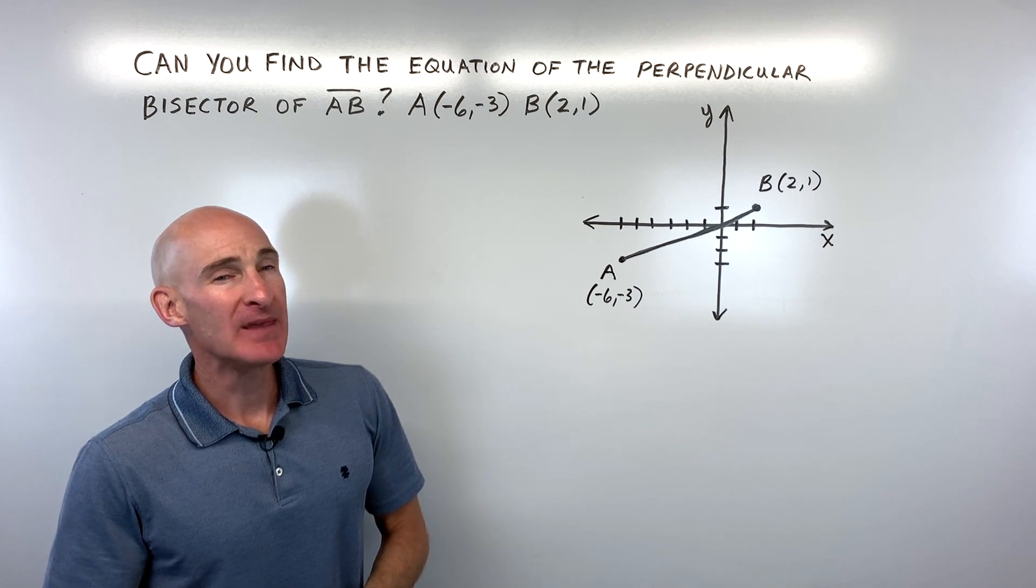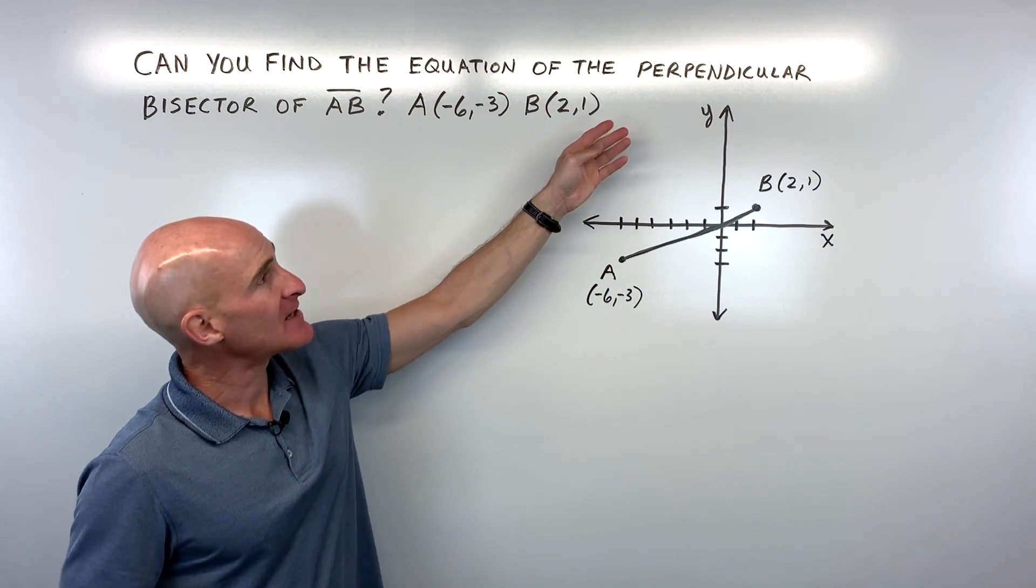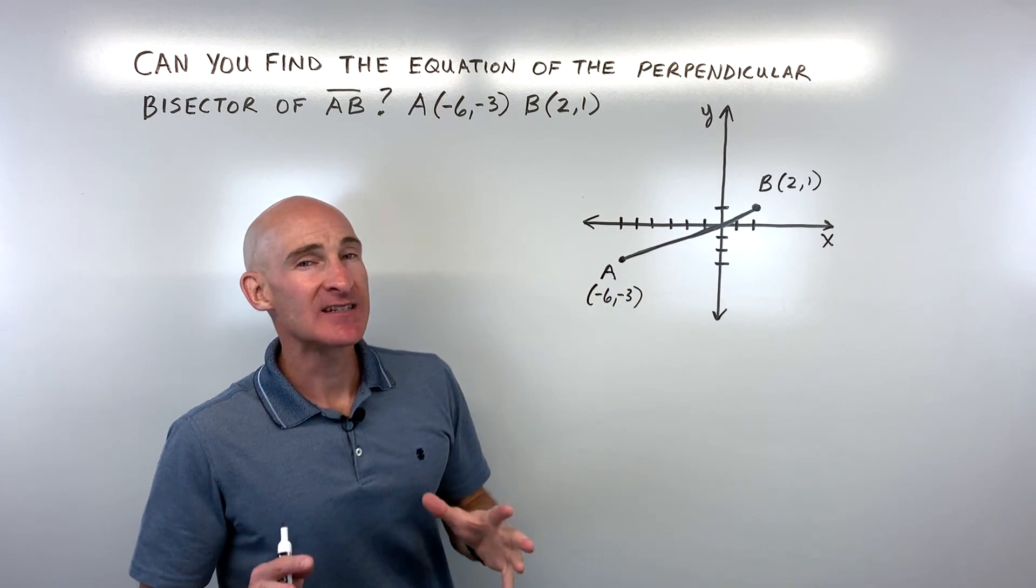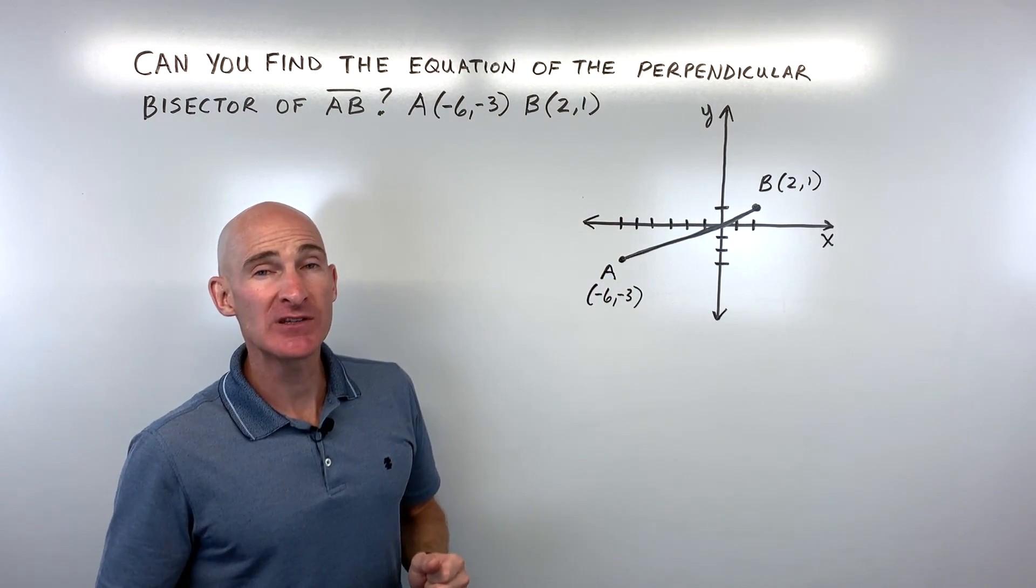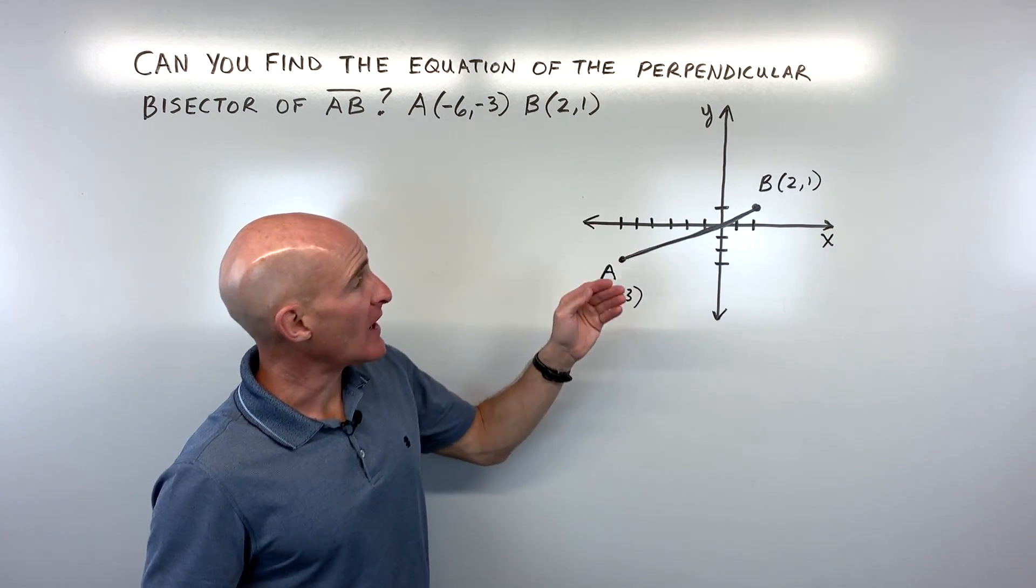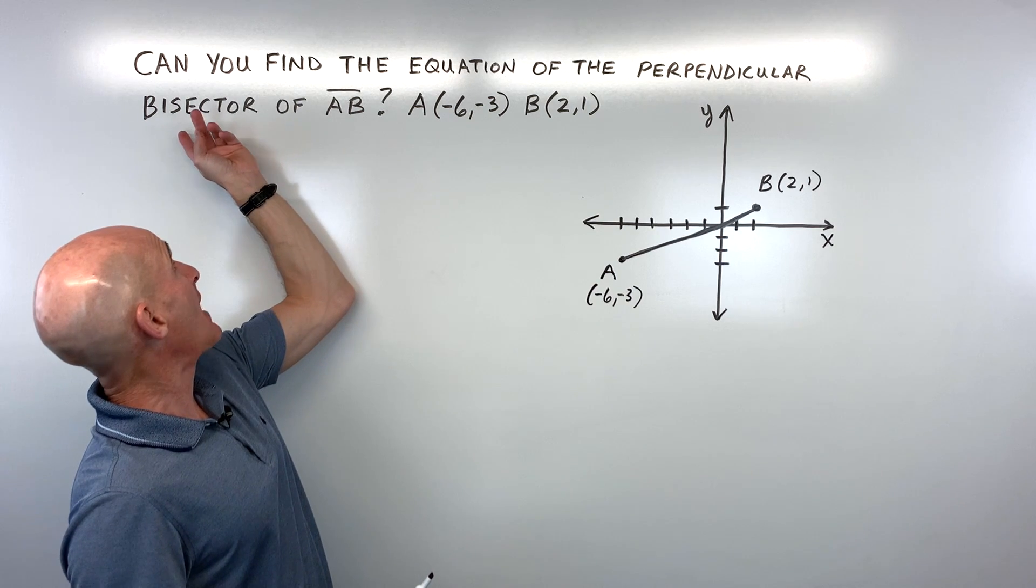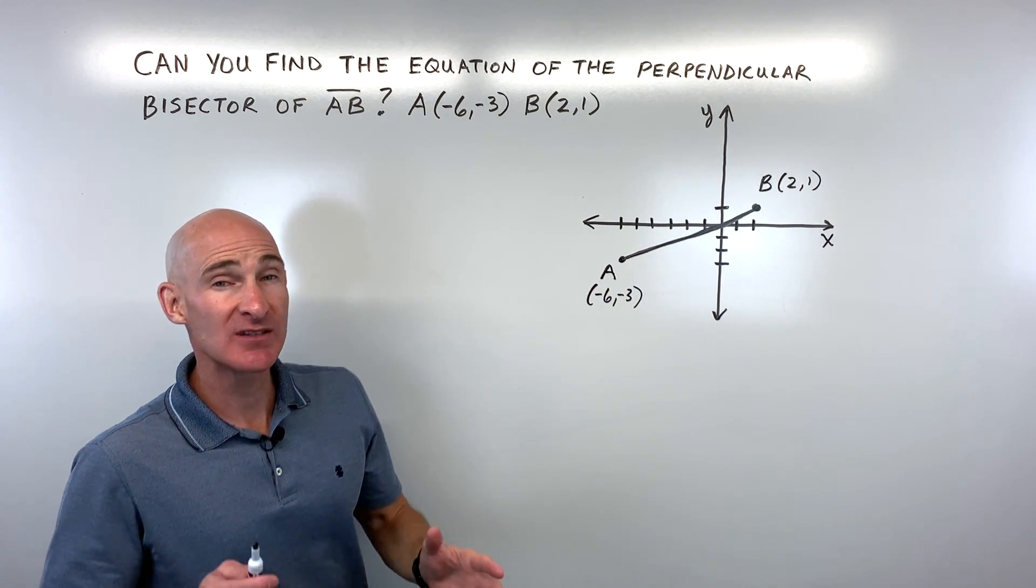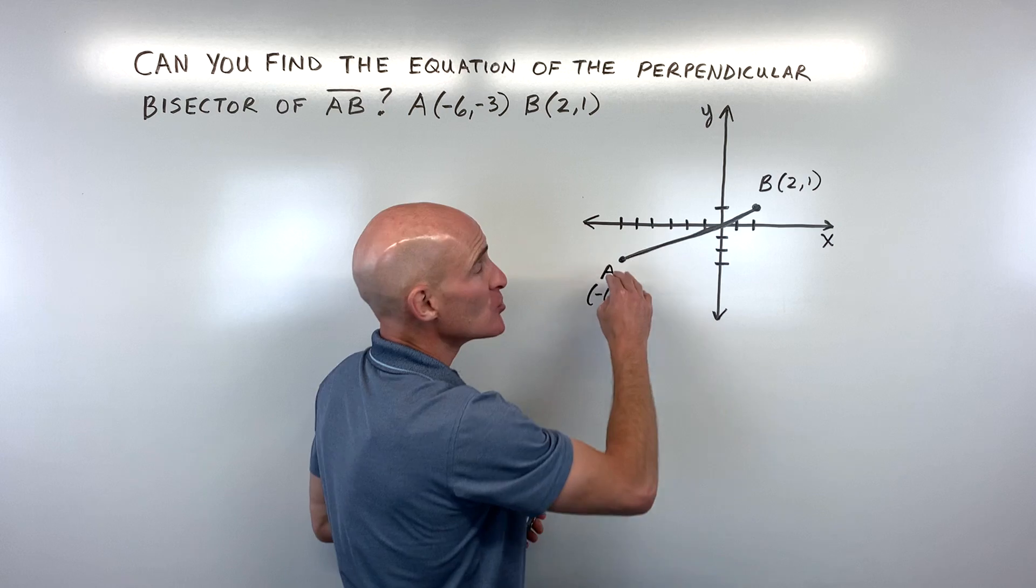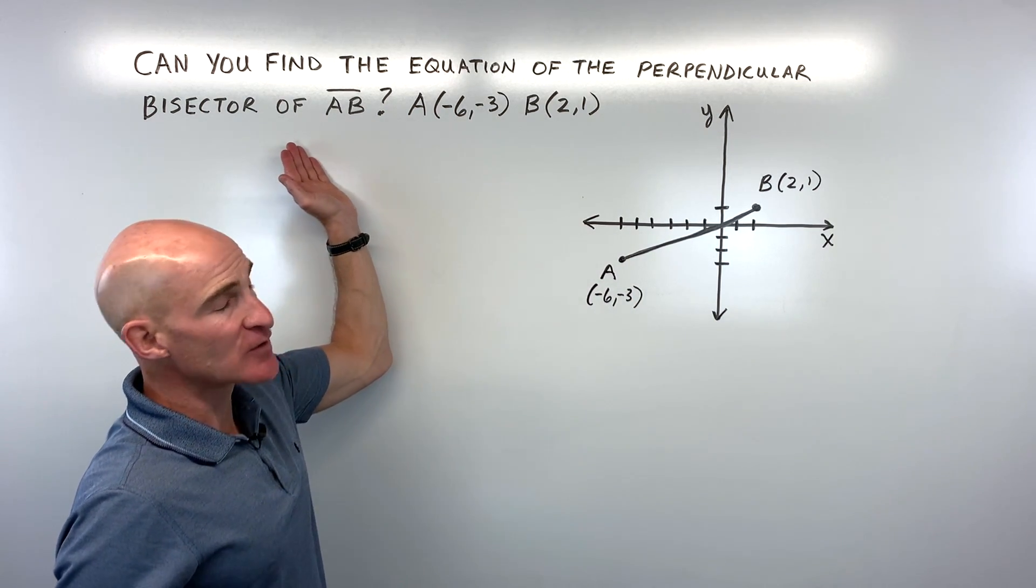And what exactly does that mean, a perpendicular bisector? Well, a lot of times if you look at the word and just kind of take your time and break it down into smaller pieces, it tells you what it is. Perpendicular means that it's at a right angle to this line segment. And bisector, bi means two, sect means to cut. So basically you're cutting this segment into two equal parts. Let's take a look at the bisector part of this first.